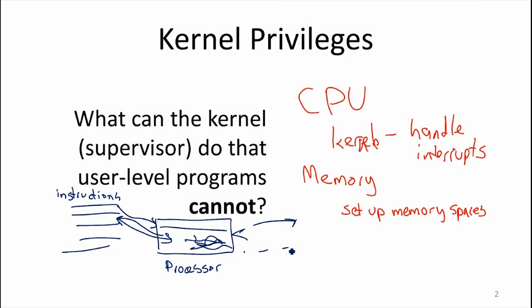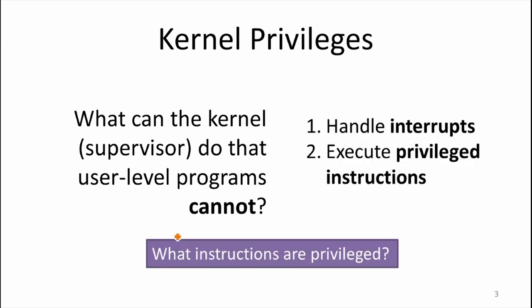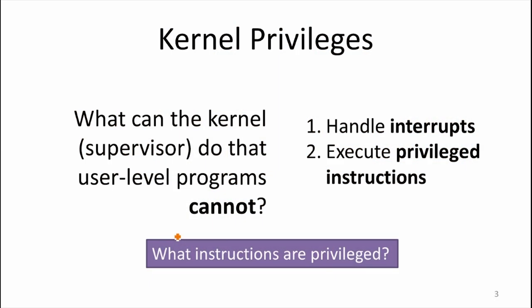In general, there are some instructions that any program can execute, and there are some instructions that you have to be special to execute — these are the privileged instructions that only the kernel can execute. The processor looks at the instruction, and if it's a privileged instruction, it won't allow it to execute unless you're running as the kernel. It's not necessarily the case that all privileged instructions are always privileged — some are, and others may fail only if executed with the wrong parameters by a non-privileged program.